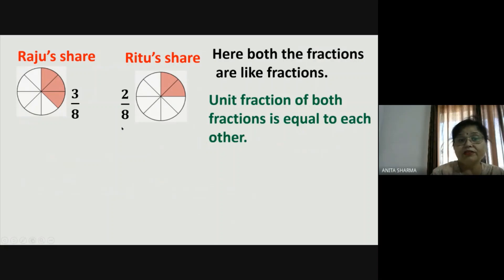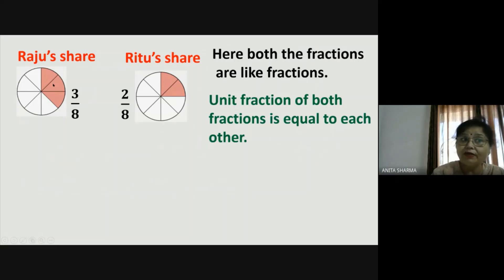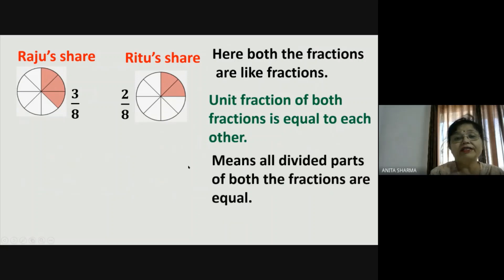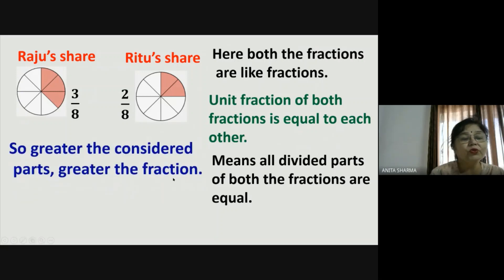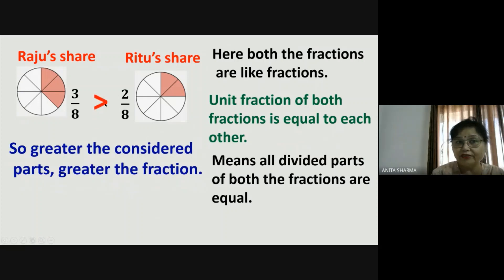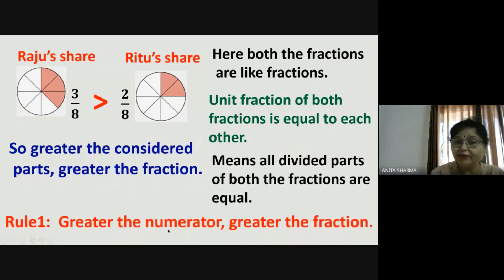Since the denominators are equal, the unit fraction of both fractions is equal to each other. One part of two eighths and one part of three eighths are equal in size — all divided parts of both fractions are equal. So, greater the number of considered parts, greater the fraction. Raju's share is greater because three is greater than two — he took more pieces of equal size, so three eighths is greater than two eighths. The rule is: greater the numerator, greater the fraction, when the denominators are equal.